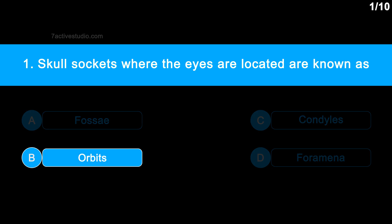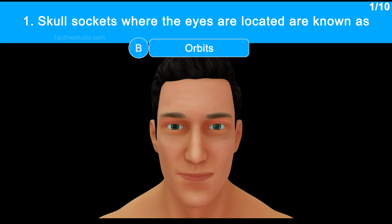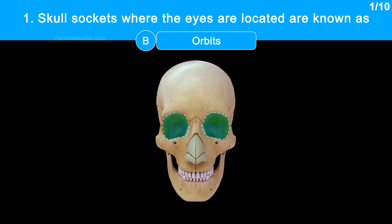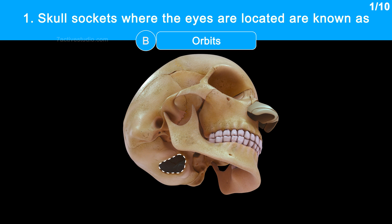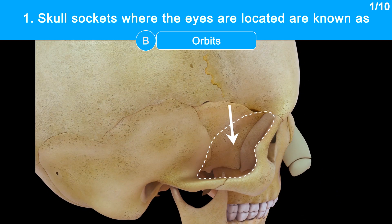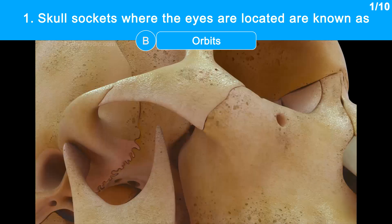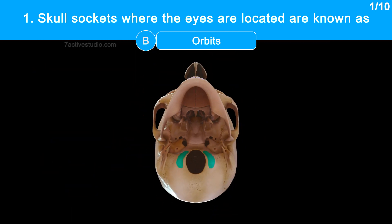The correct answer is option B, orbits. Orbits are the name of the sockets. Foramina, like the occipital foramen, are apertures, holes or passages in bones. Fossey, like temporal fossey, are depressions, pits or grooves. Condyles, such as the occipital condyles, are articular prominences of a bone.